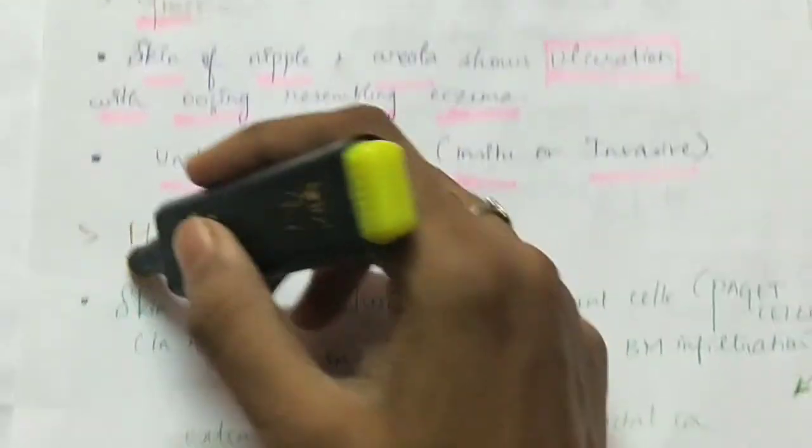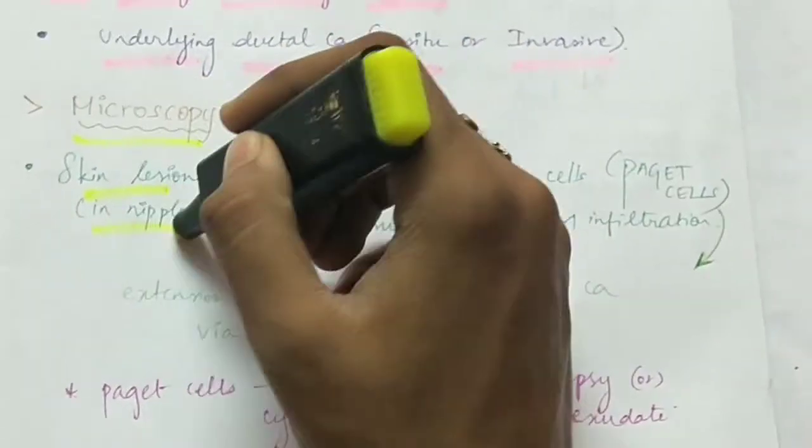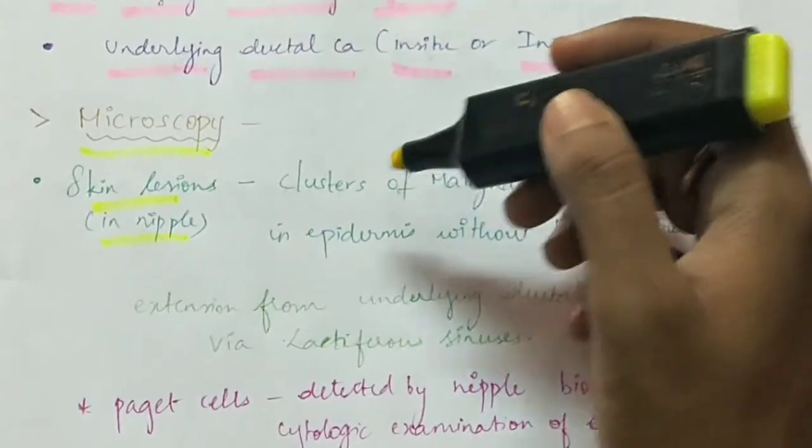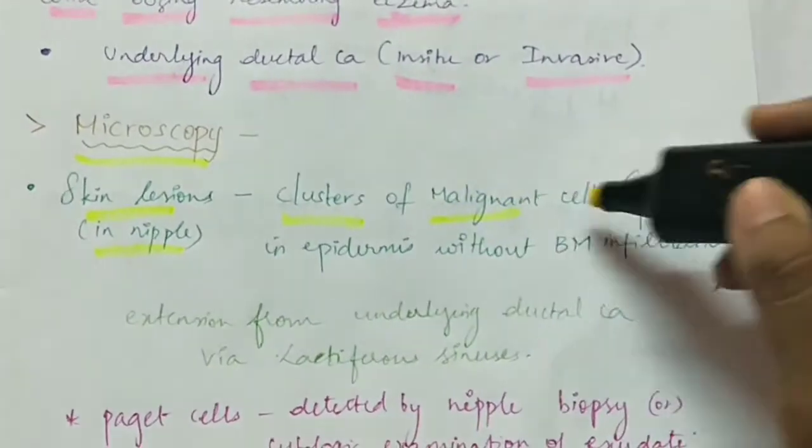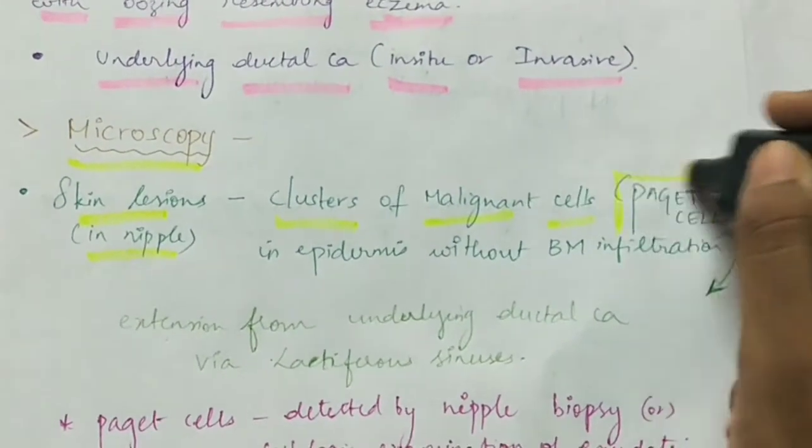Next is the microscopy of Paget's disease. Skin lesions are seen at the nipple and the skin lesions consist of clusters of malignant cells called as Paget's cells.